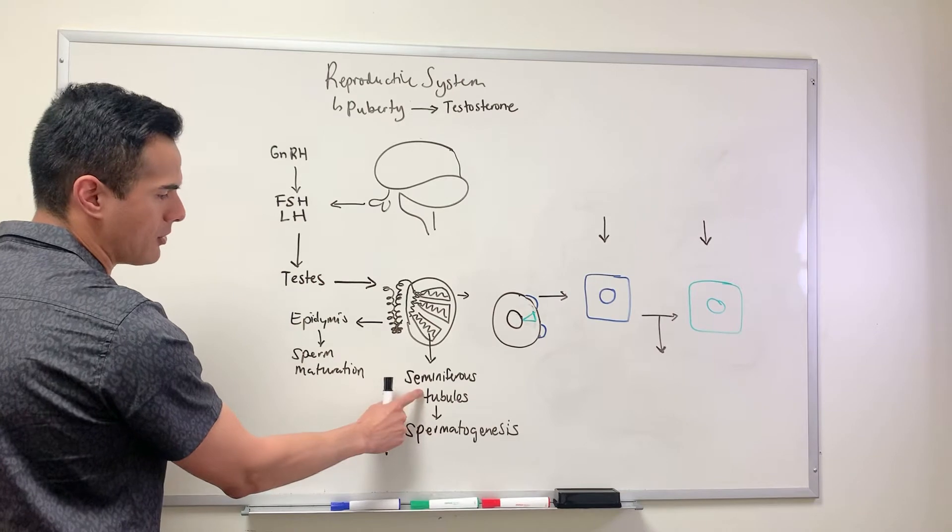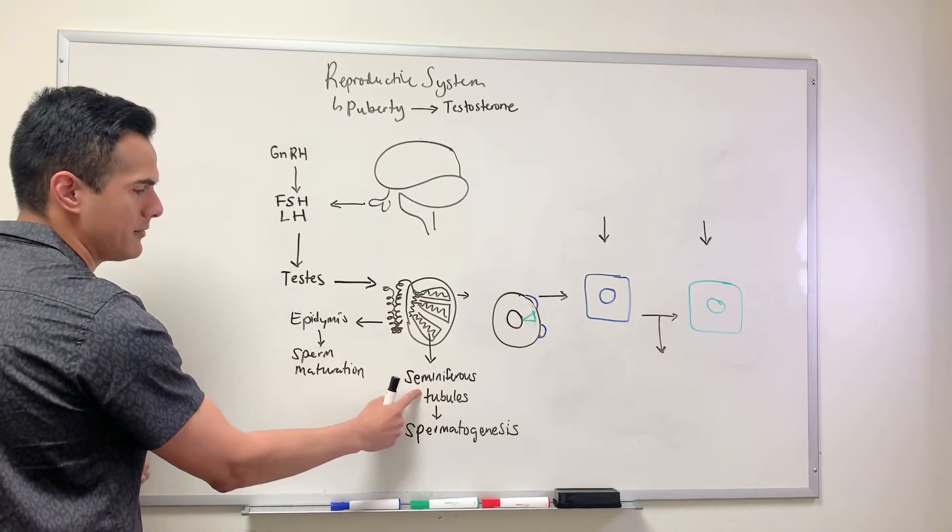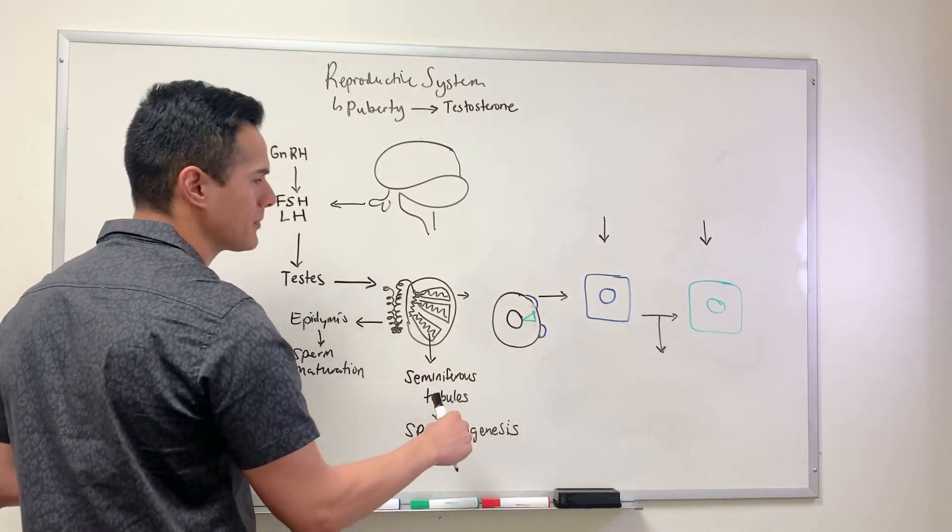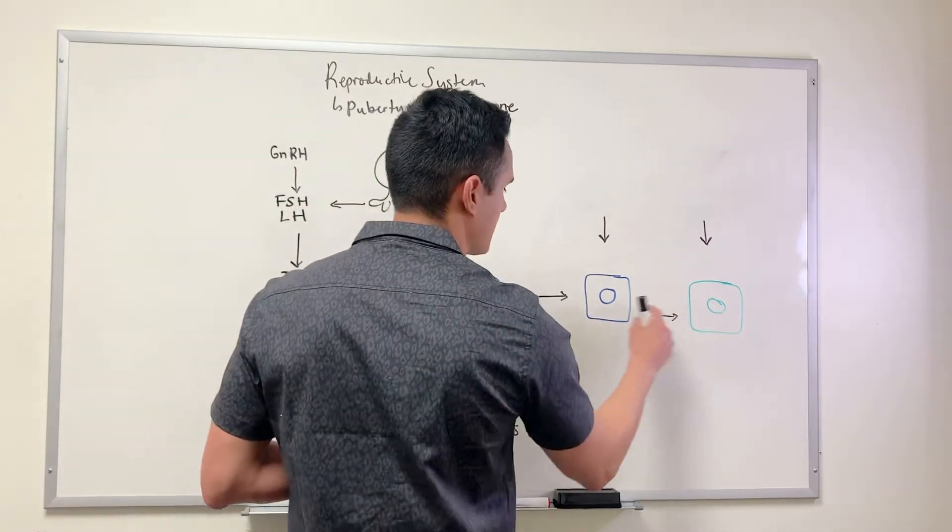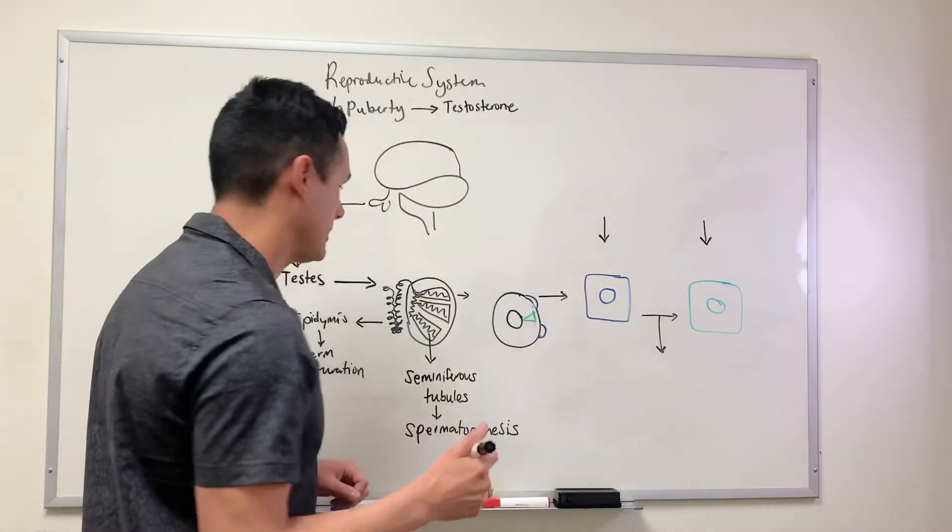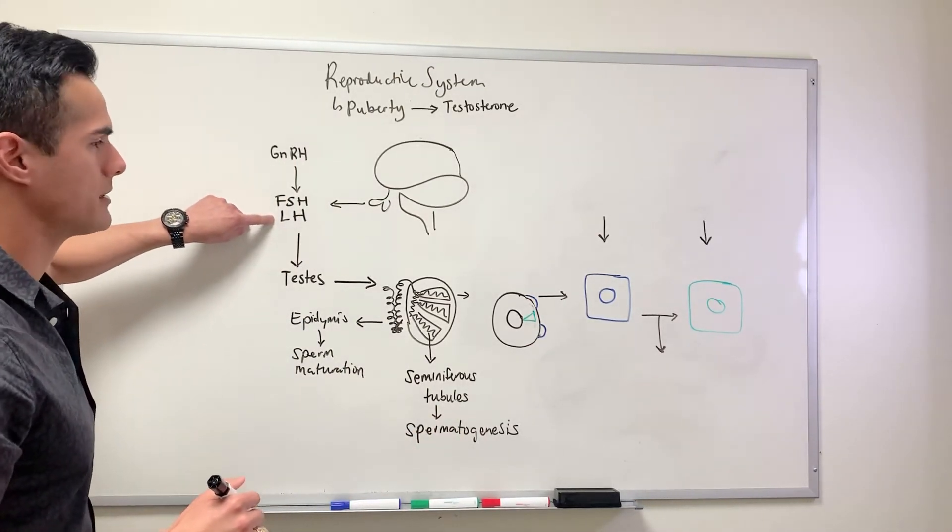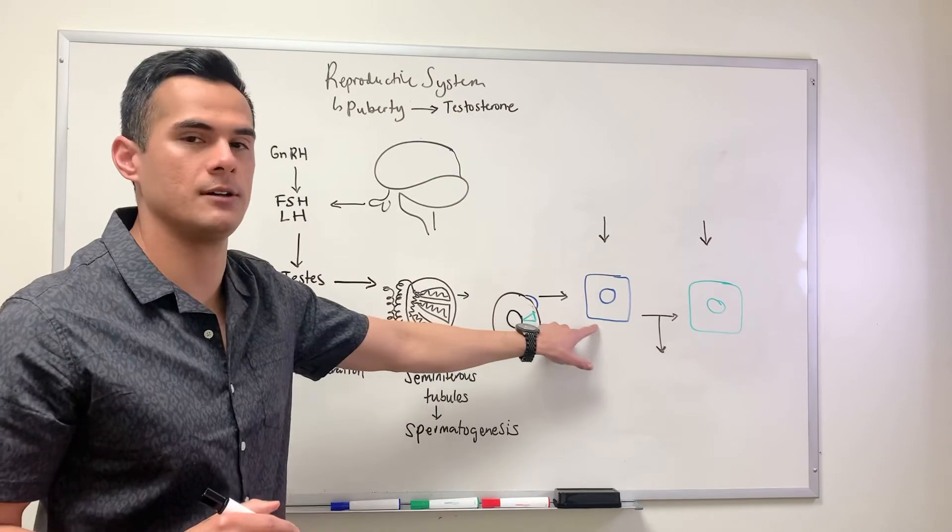If I take a cross-section of the seminiferous tubules - this is the cross-section here - I have these two different cells. Because the hormones released, FSH and LH, these are the cells they're going to target.